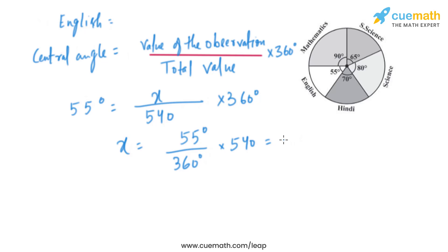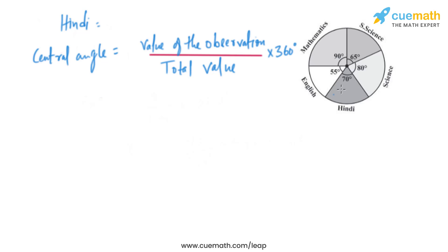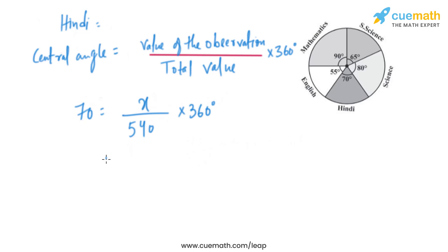Now let's move on to Hindi. The central angle given is 70 degrees. So, 70 equals x divided by 540, multiplied by 360. Solving for x, the marks obtained in Hindi is 105 marks.